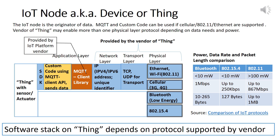This slide shows the software stack on the device and the protocols supported. Connectivity between the device and the cloud application depends on the software stack supported on the device. As can be seen from the table, low-power devices typically use Bluetooth. In such a case, a gateway is required for protocol conversion and transmission of data to the cloud using MQTT, HTTP, or AMQP. The reference to MQTT is illustrative only and may be replaced by other supported protocols from the vendor.